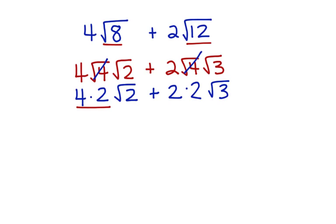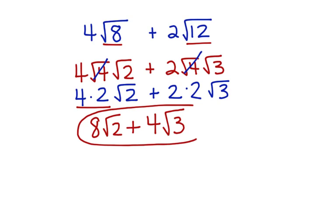Now we're going to multiply. 4 times 2 gives me 8, bring down the square root of 2, plus 2 times 2, which is 4, bring down the square root of 3. Now I've simplified this as far as I can go, and I have terms that are not alike. So this is as far as I can go, and this is my answer.